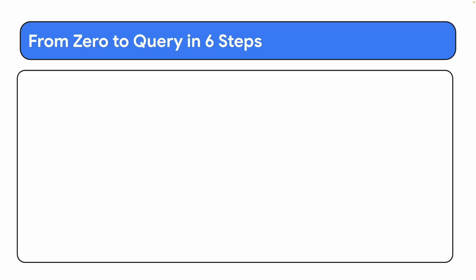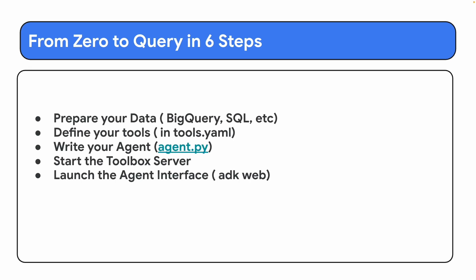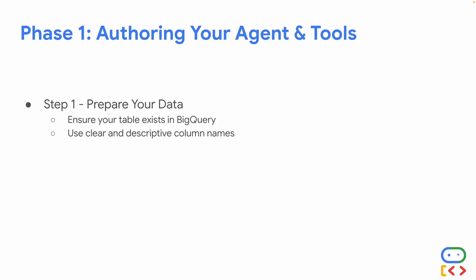While building my first MCP server, I found there are six main steps to connect a simple AI agent to a database. Step one: prepare your data — BigQuery, SQL, etc. — with structured data. Step two: define your tools in a tools.yml file. Step three: write your agent in an agent.py file. Steps four through six: start the toolbox server, launch the agent interface, and start talking with your agent.